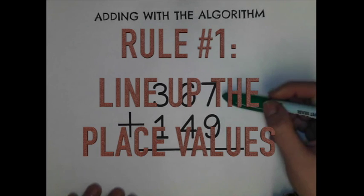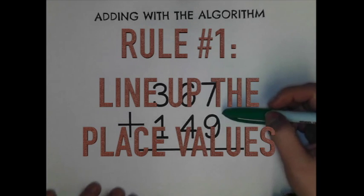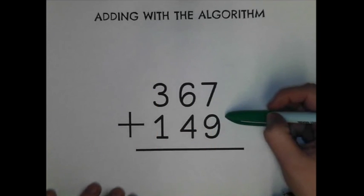Rule number one for the stacking algorithm is make sure you line up your place values. If you don't line up your place values, your answer is not going to make sense.